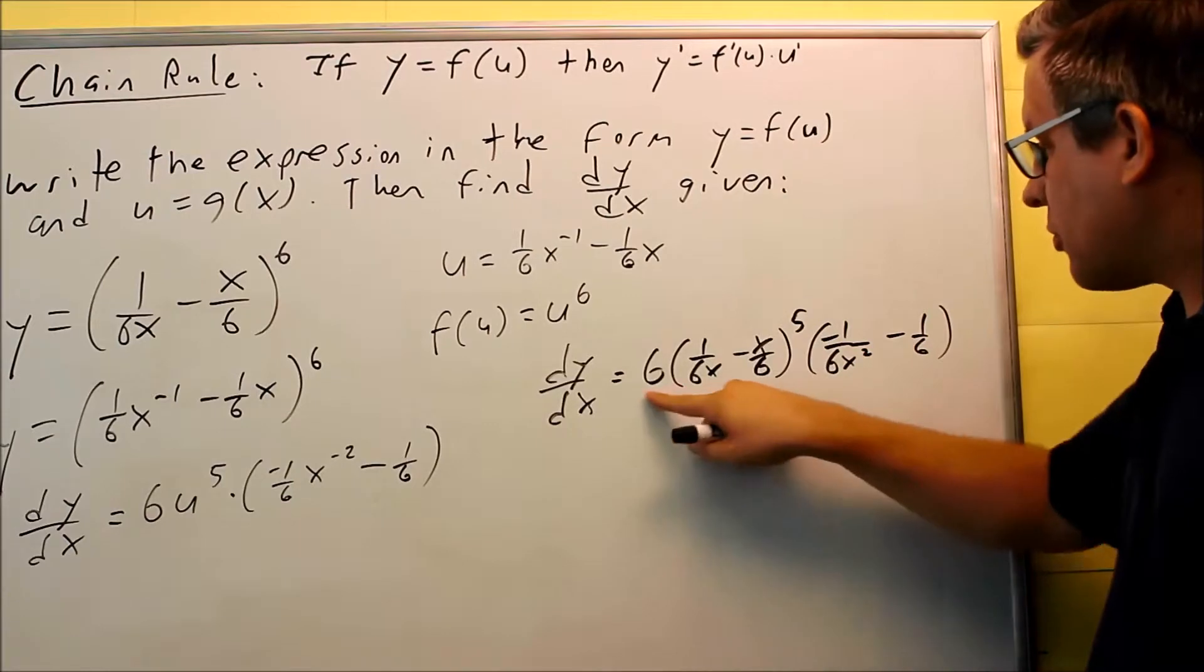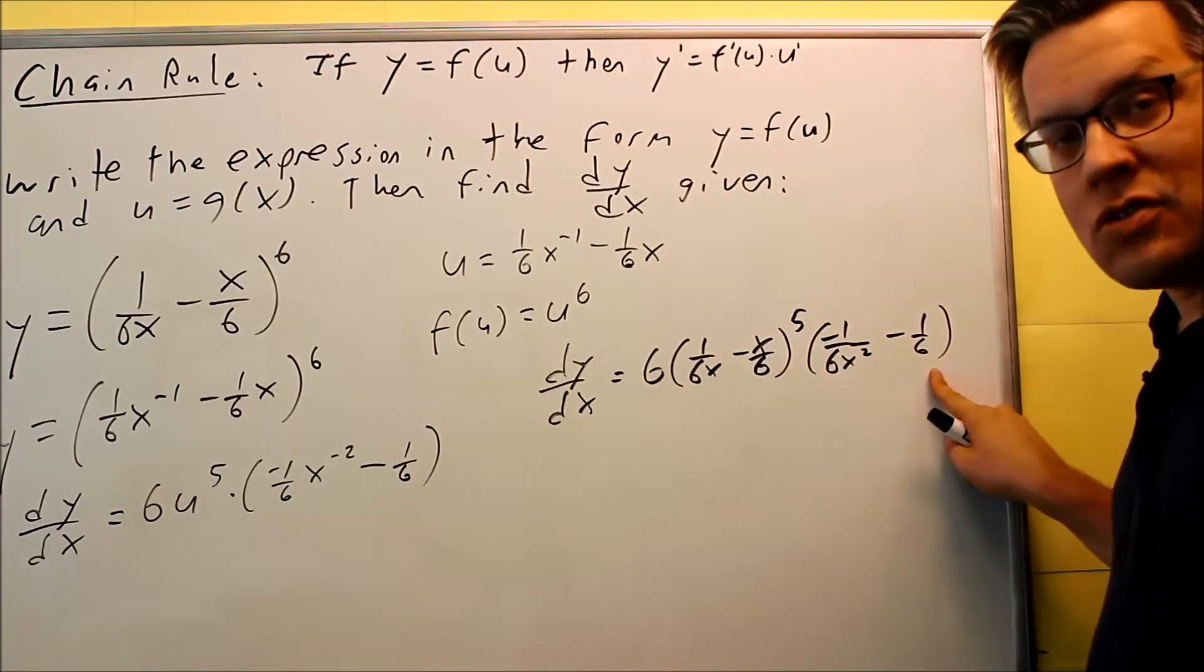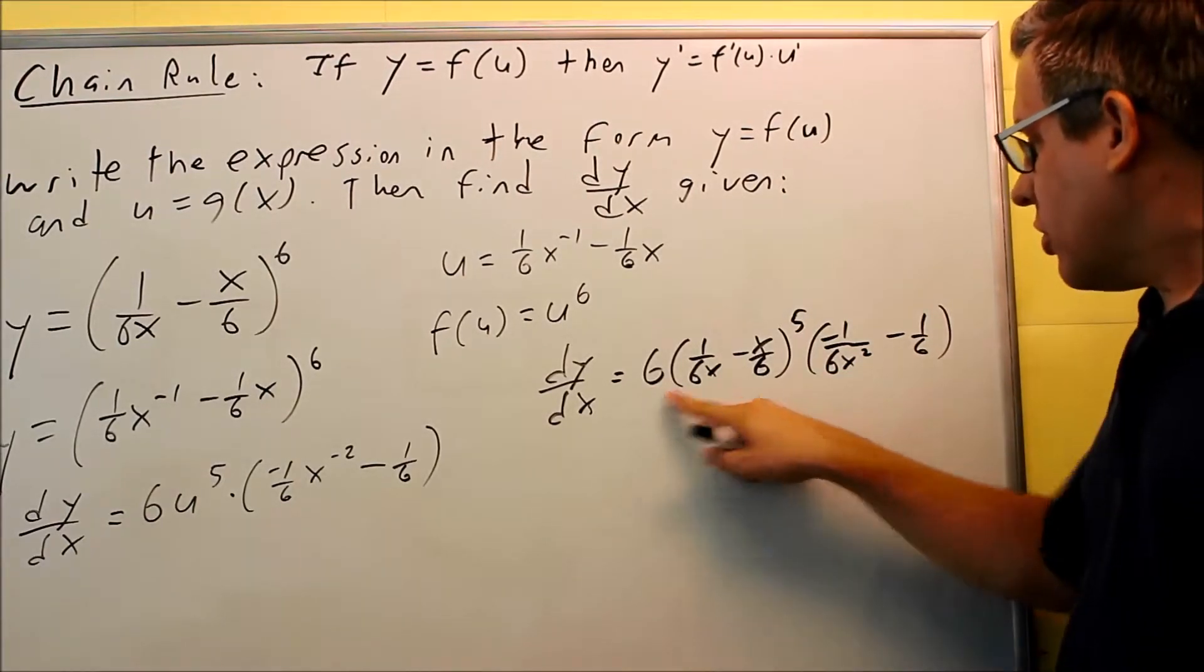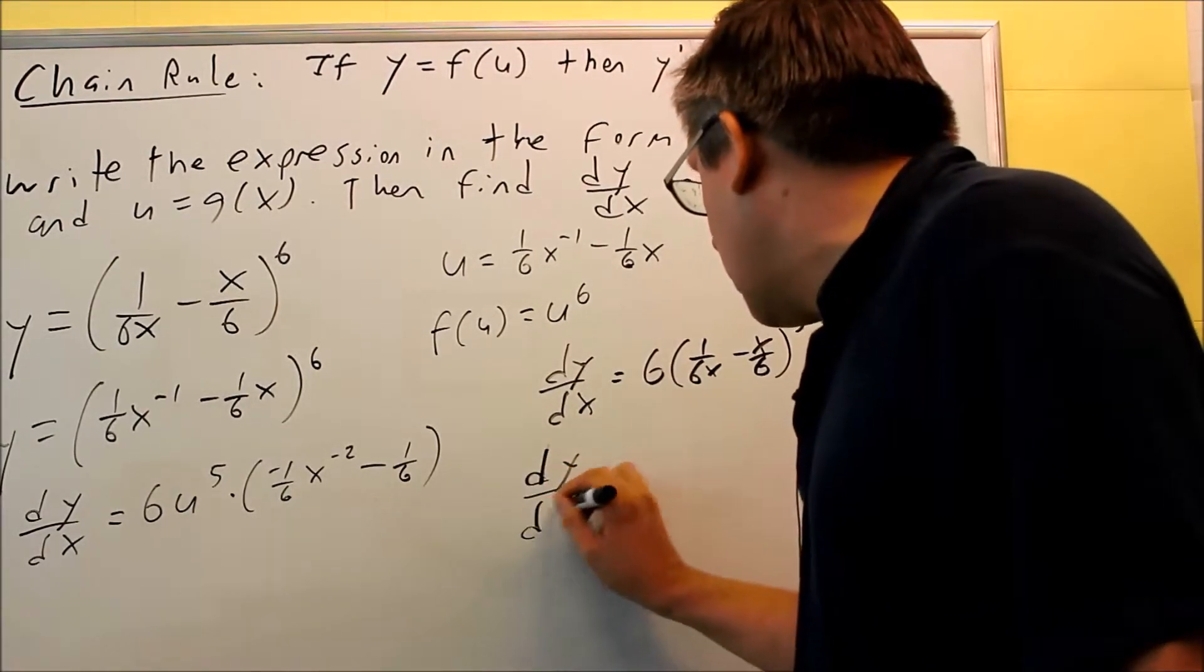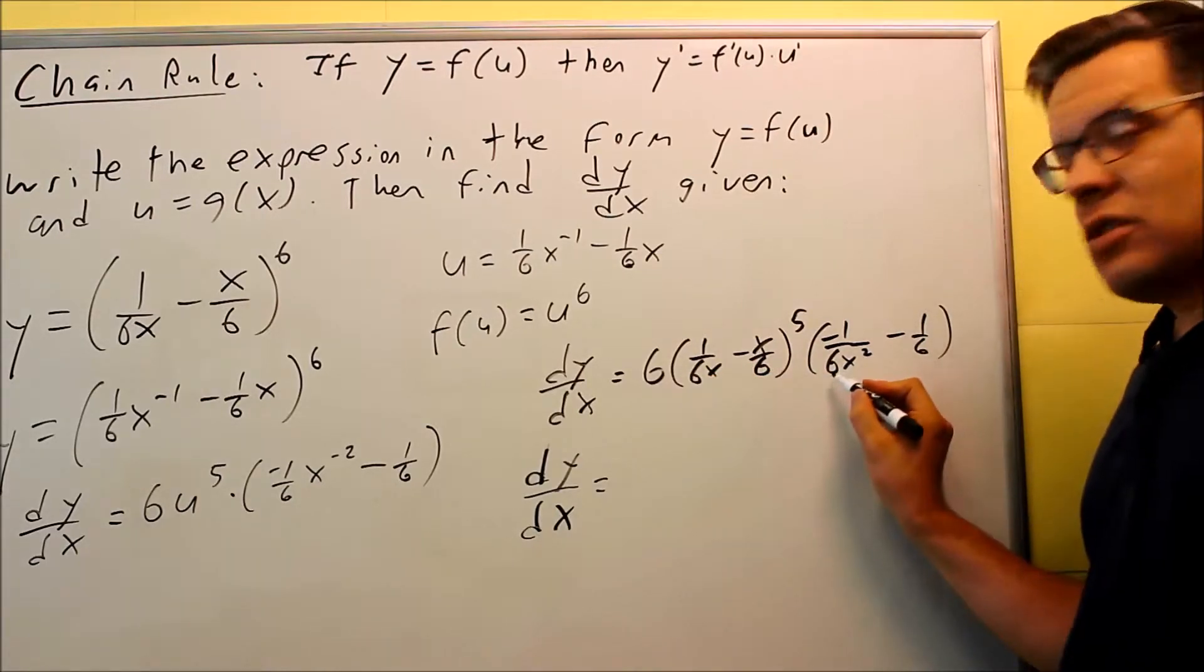So I'm going to multiply the 6 inside each of these, distribute it through. So when I do, it'll just basically get rid of the 6 that's there. So dy/dx, if I rewrite it, the 6 is canceled.